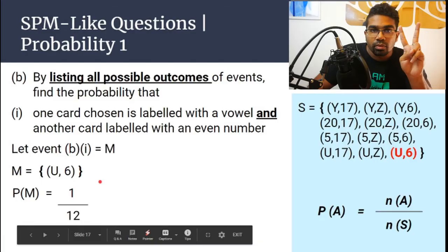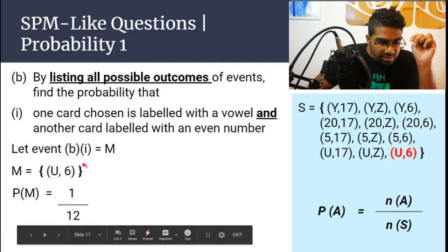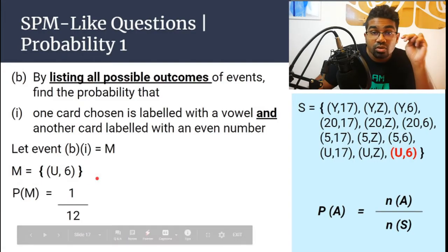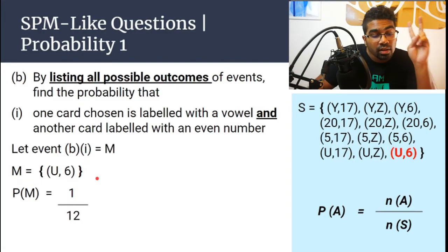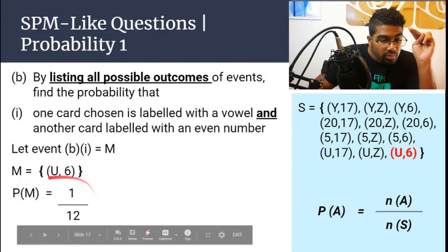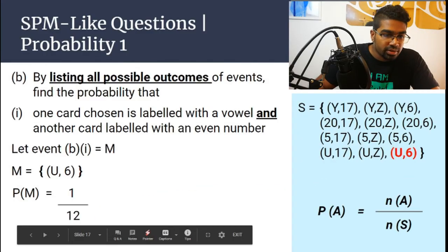So two things to note: listing — don't forget to list — use set notation. And then calculate the probability. Let's look at the second type of question.